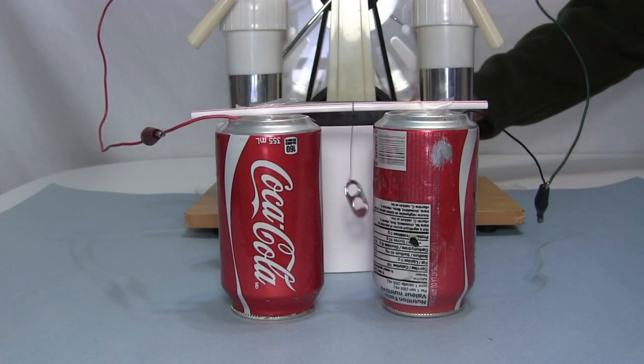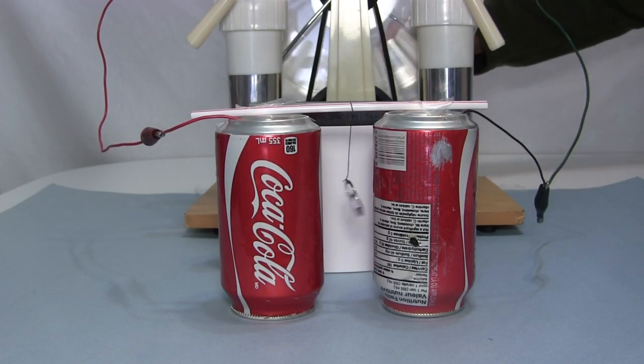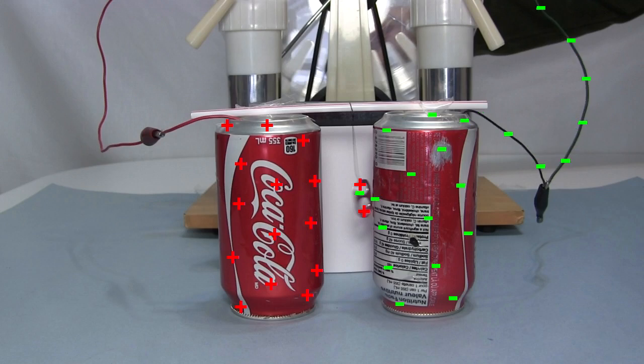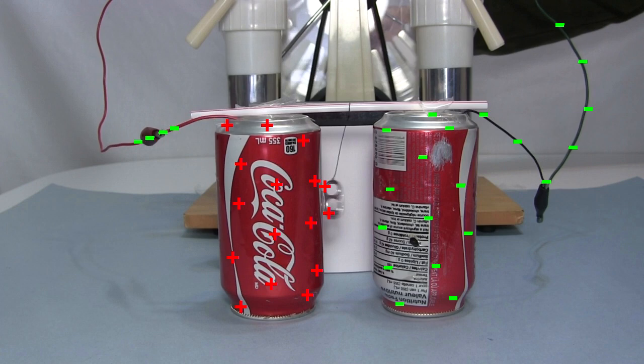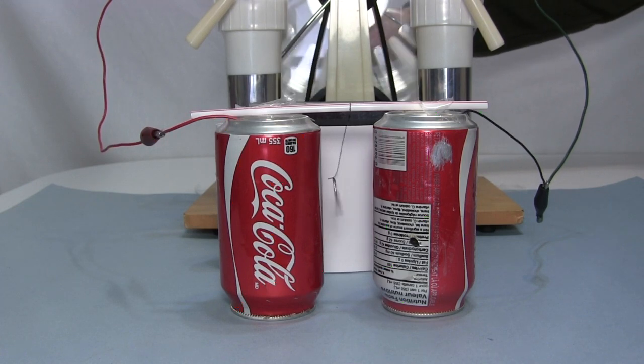So how does that apply to our homemade Franklin's bell? The bell part is the same. Electrons move for the same reasons from the negatively charged can, to the tab, and then to the other can, as the tab is attracted and repelled back and forth between the cans.